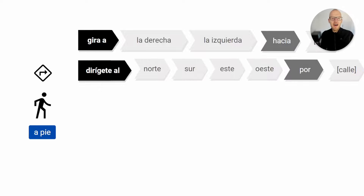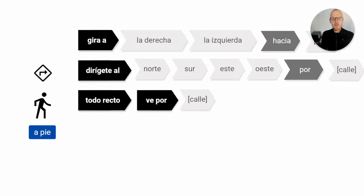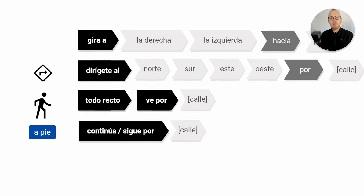Other things you can hear: todo recto — straight ahead. Or ve por — go through or towards a certain street or place; ve is the verb ir, to go. For example: todo recto, o ve por la calle Alcalá. You can also hear continúa or sigue por — keep going, keep going in that direction, keep going through that street. Both continuar and seguir mean the same thing.